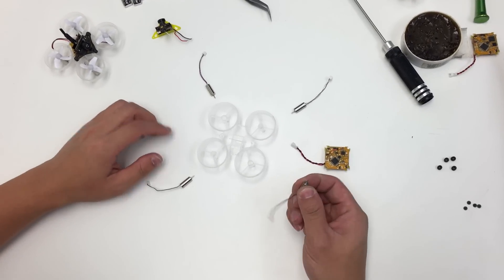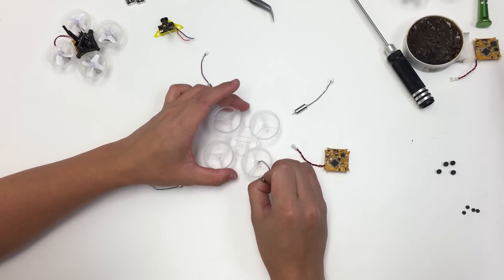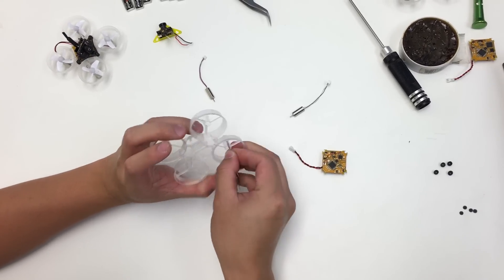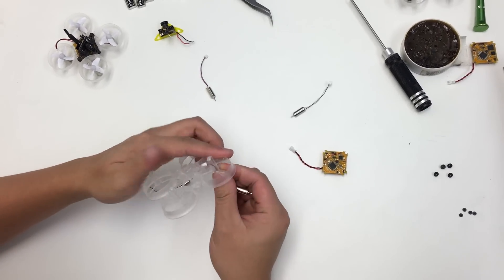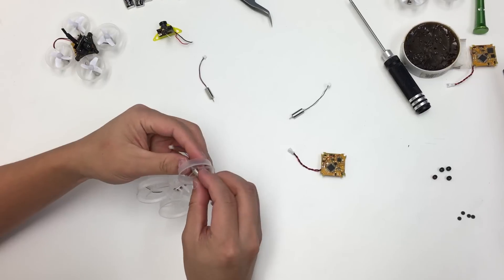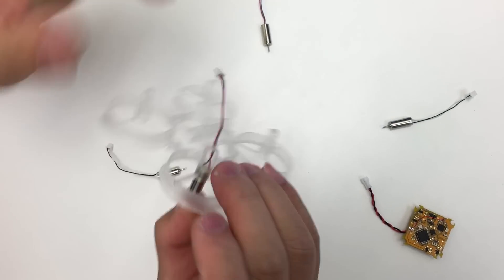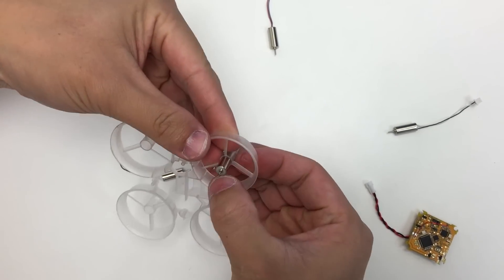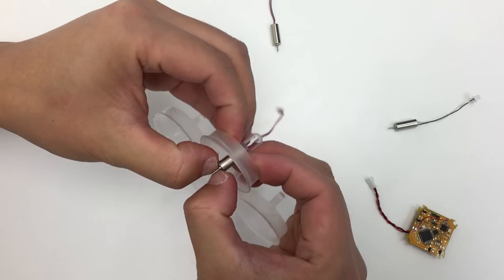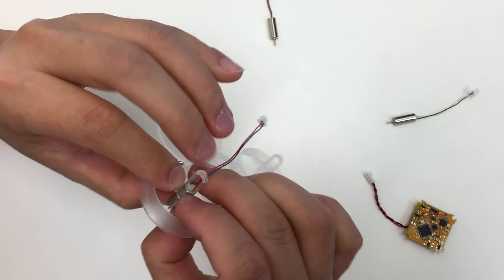The first step is to grab the motors and slide them into the frame. One of the tricks we like to do is use your fingers and put each finger over one of the struts, so that when you push it in you won't accidentally break one of the struts there.